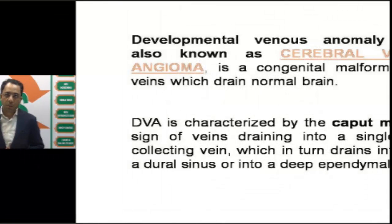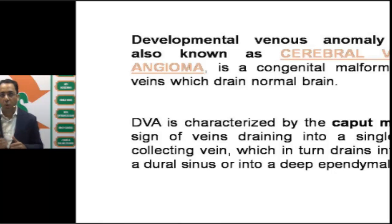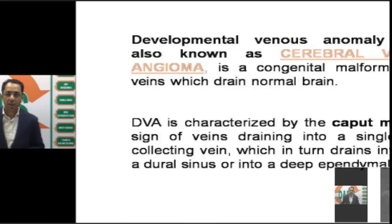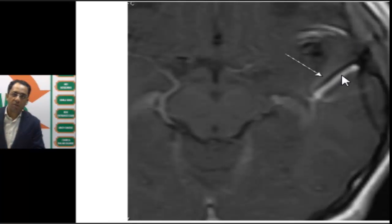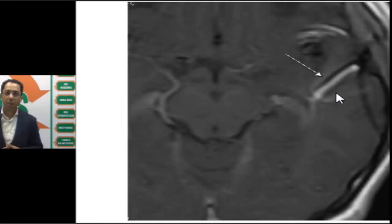The third type is a venous angioma, also called developmental venous anomaly (DVA). This is a congenital malformation of the vein where you have caput medusae-like umbrella-shaped veins draining into a single larger collecting vein, which in turn drains into a dural sinus or a deep ependymal vein. The typical appearance is the caput medusae appearance. You can see the large draining vein with smaller caput medusae-like draining veins feeding into it. This is often clinically occult and picked up incidentally on contrast-enhanced MRI imaging.